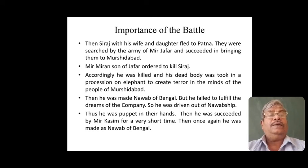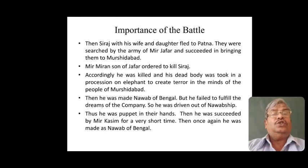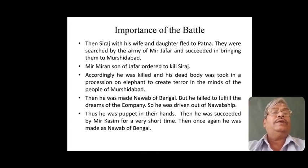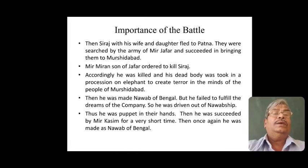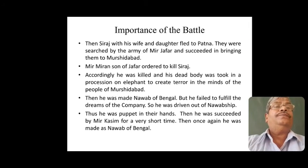After killing Siraj ud-Daulah, the dead body was brought to Murshidabad and taken in a procession on an elephant. This was done with the intention of creating terror in the minds of the people of Murshidabad. This is how they took revenge upon Siraj ud-Daulah, the trusted Nawab of Bengal. Mirjafar, who had conspired against his trusted Nawab, was made Nawab of Bengal, but he failed to fulfill the demands of the company and was driven out. He was succeeded by his son-in-law Mir Kasim, who also failed, and so Mirjafar was once again declared Nawab of Bengal.